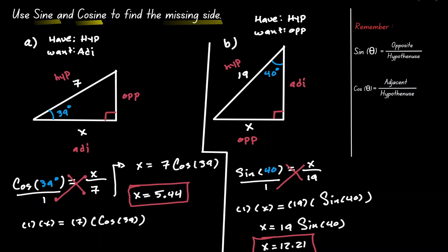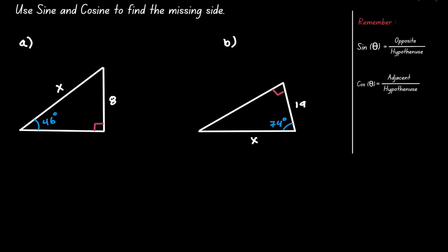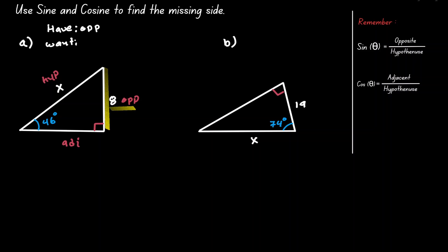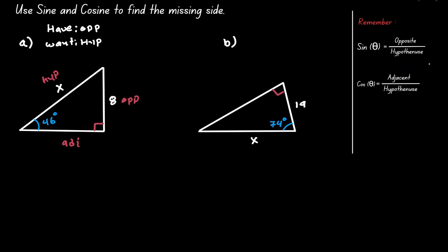Let's take a look at another example. We're going to approach it the same way. Let's start by identifying the reference angle, which is 46. Now let's label our triangle. Let's think about what it is that we have and what we want. We have the length of the opposite, and we want the length of the hypotenuse. So based on this information, we can decide that we need to use the sine function, because it's opposite over hypotenuse — the numerator is what we have, and the denominator is what we want.